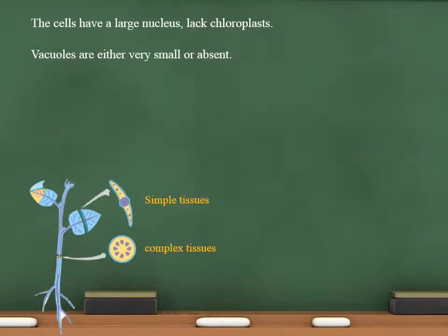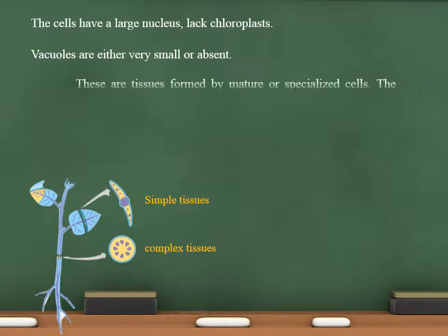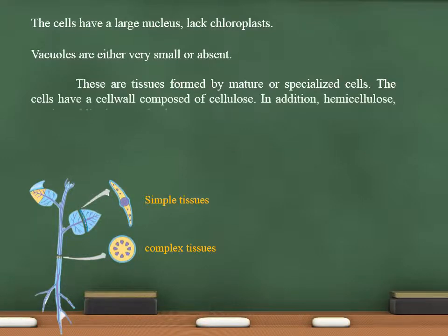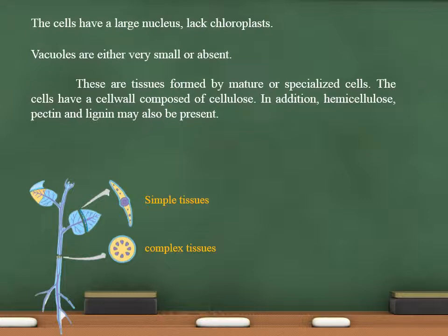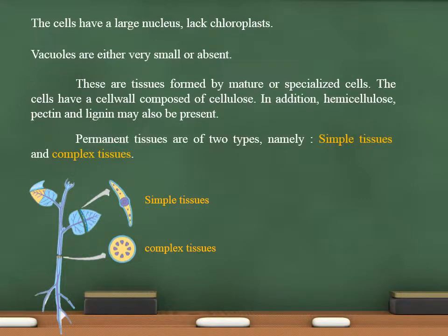Permanent tissues are formed by mature or specialized cells. The cells have cell walls composed of cellulose. In addition, hemicellulose, pectin, and lignin may also be present. Permanent tissues are of two types, namely simple tissues and complex tissues.